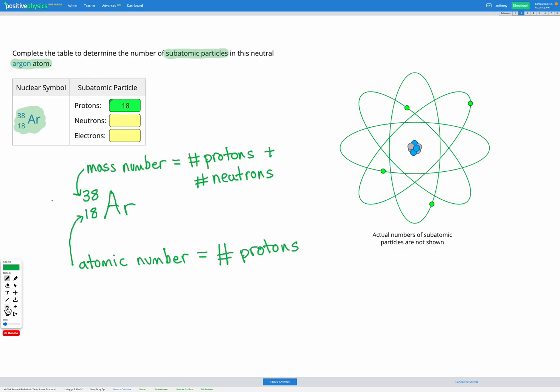So in this question, we know we have 18 protons and we know that we have 38 protons and neutrons together. So we can do a little calculation. We know the total is 38, and that's 18 protons plus a certain number of neutrons. So to find our neutrons, we're going to subtract 18 from 38. So the number of neutrons is 38 minus 18, which is 20.